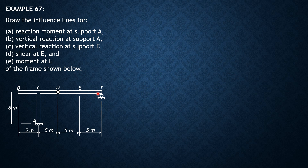We first evaluate if the frame is determinate or not. There are three unknown reactions at A: vertical, horizontal, and reaction moment; two at the hinge at D; and one at F — giving six unknown support reactions in total. With two free body diagrams (part A-B-C-D and part D-E-F), six equals three times two, so six equals six. Therefore, this is determinate and stable.